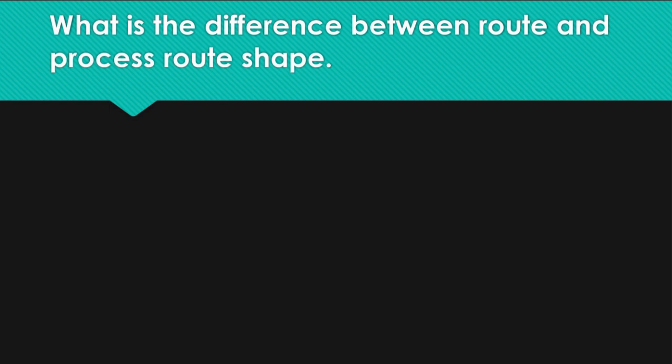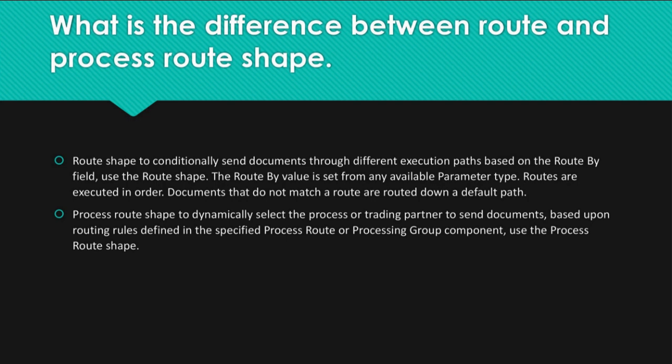Question: What is the difference between route and process route shape? Answer: Route shape — to conditionally send documents through different execution paths based on the route-by field. The route-by value is set from any available parameter type, and routes are executed in order. Documents that do not match a route are routed down a default path. Process route shape — to dynamically select the process or trading partner to send documents, based upon routing rules defined in the specified process route or processing group component.